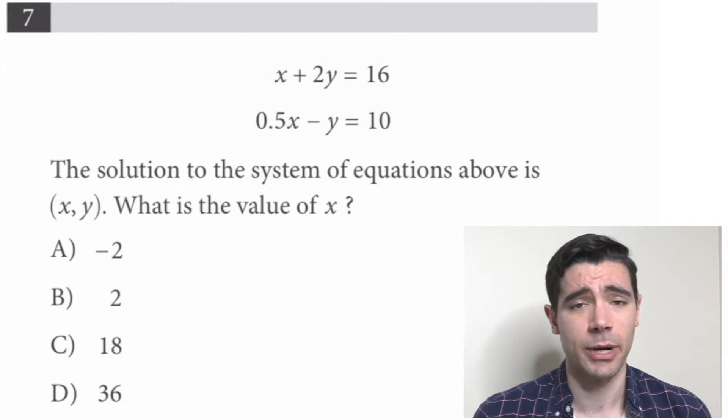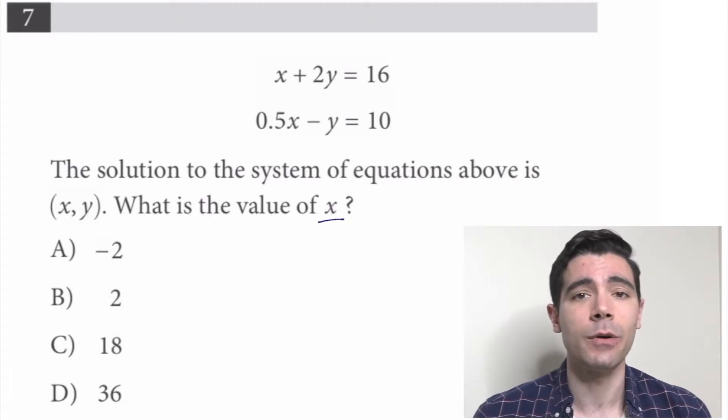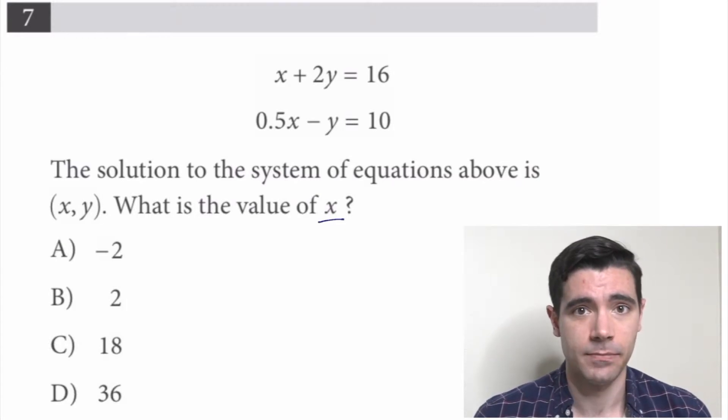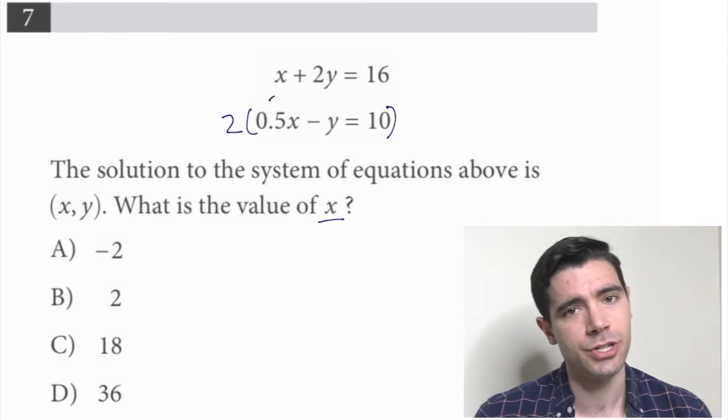Well, we've got ourselves a system of equations, and what we want is x. So if we're going to solve by combination, we'd like these y's to drop out. We need the coefficients on the y terms to be the same. Well, looks like if we multiply this bottom equation by 2, we would end up with negative 2y, which could be convenient. So let's do so.